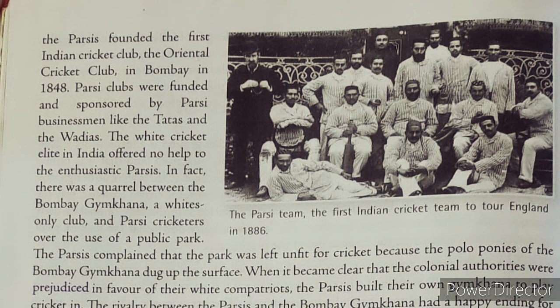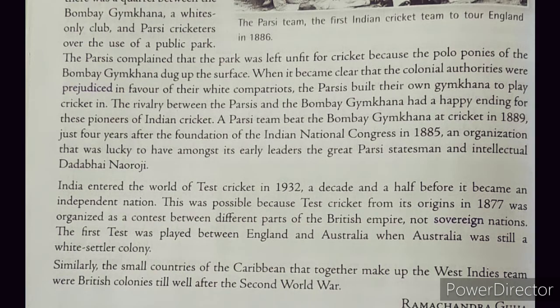There was a quarrel between the Bombay Gymkhana, a white-only club, and Parsi cricketers over the use of a public park. The Parsis complained that the park was left unfit for cricket because the polo ponies of the Bombay Gymkhana dug up the surface. When it became clear that colonial authorities were prejudiced in favor of their white compatriots, the Parsis built their own gymkhana to play cricket. A Parsi team beat the Bombay Gymkhana at cricket in 1889, just four years after the foundation of the Indian National Congress in 1885.